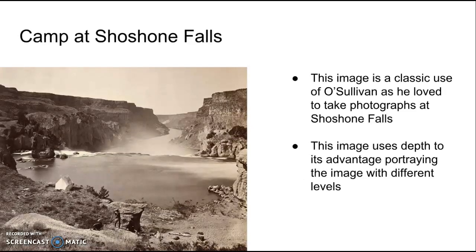One of his most popular works that I found was Camp at Shoshone Falls. This is where he liked to take a lot of images on the western side of America, and this image is a classic example of O'Sullivan's style. Compositionally, it uses depth very well, showing the waterfall dip off into the river and back into the canyon, with a good foreground, middle ground, and background — overall a pretty good image.